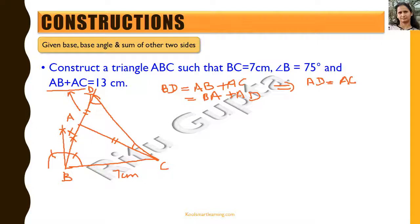This is one way of constructing the triangle. Knowing angle ADC equals angle DCA, we construct an equal angle at C on segment CD, and where this intersects BD is point A. This is the first method of constructing a triangle given the base, base angle, and sum of the other two sides.